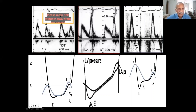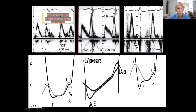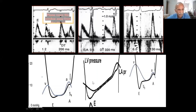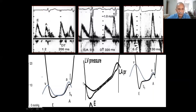For example, here deceleration time is about 180-200ms and E/A ratio is greater than 1.2, so this is essentially normal. Here deceleration time is prolonged at 320ms, E/A ratio is 0.5 — E-wave is about 0.6 and A-wave is 1 — so this is impaired relaxation. Here we can definitely say the filling pressure is normal. Here we don't know whether the filling pressure is normal or abnormal — it can be changing.